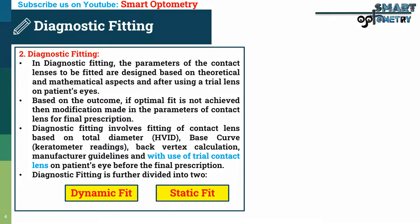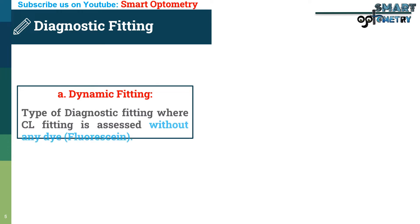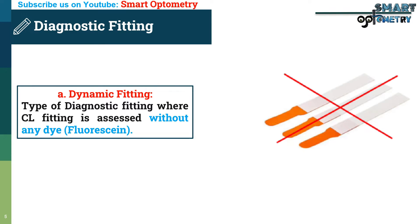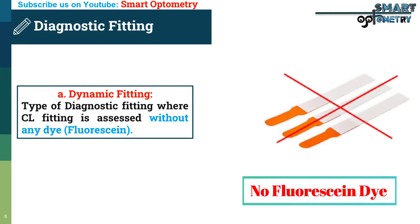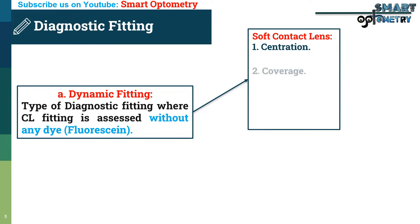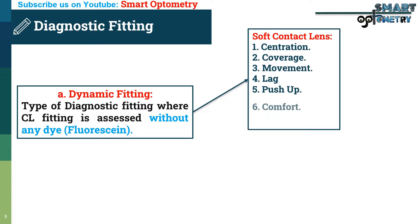Dynamic fitting is a type of diagnostic fitting where contact lens fitting is assessed without any dye, like fluorescent dye. In dynamic fitting of soft contact lenses, we assess the following parameters: 1. Centration, 2. Coverage, 3. Movement, 4. Lag, 5. Push-up, 6. Comfort, 7. Edge, 8. What modifications are needed to get the optimal fit.